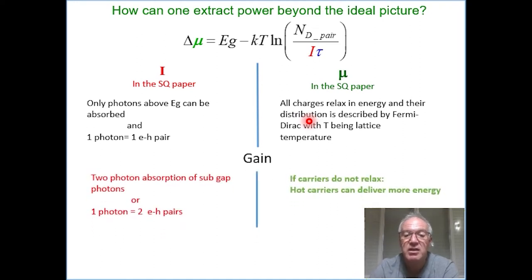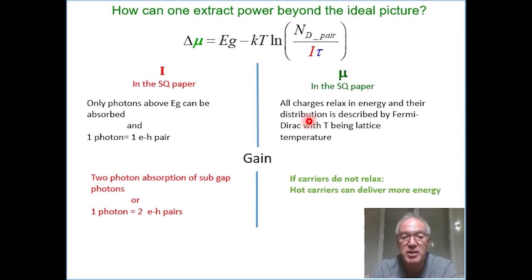Indeed, we can find materials that are efficient at two-photon absorption, so they will absorb sub-gap photons. Or there are also materials that, if you absorb a photon with an energy which is twice or more of the band gap, they will produce two electron-hole pairs.